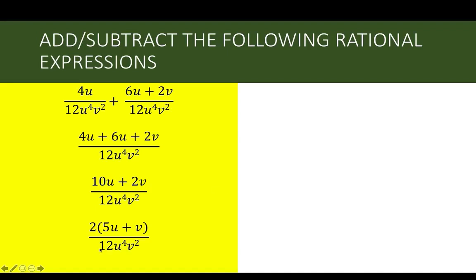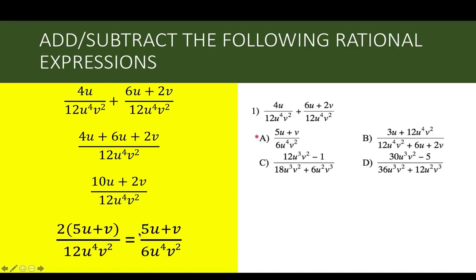By canceling the common factor between 12 and 2, we arrive at 5u plus v over 6u to the fourth v squared. Dividing the numerator by 2 gives 1, and dividing the denominator by 2 gives 6. So our correct answer is 5u plus v over 6u to the fourth v squared.